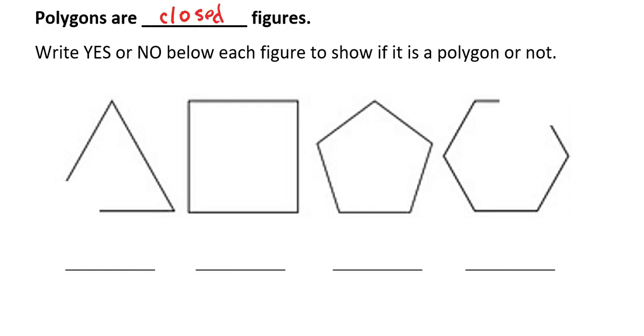And then we'll look at the shapes below and decide whether or not they're polygons. This first shape has an opening here, so it cannot be considered a polygon. The square is a polygon because there are no openings in that shape. And the pentagon is also a polygon, no openings there. And my last shape has an opening at the side there, so that would not be considered a polygon. So that's one property of polygons.